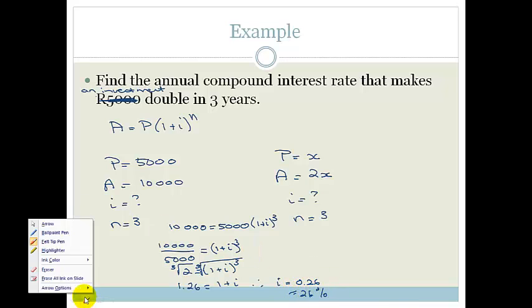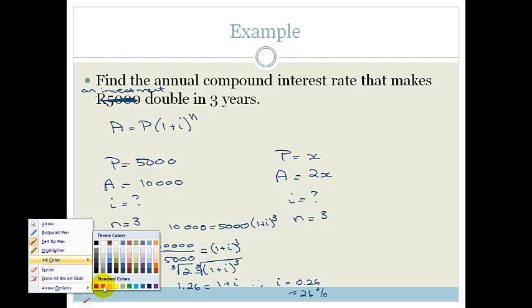Now let me do the other question where we didn't know what the amount was. Again, A equals P times 1 plus i to the n. So we've got 2x equals x times 1 plus i to the 3.